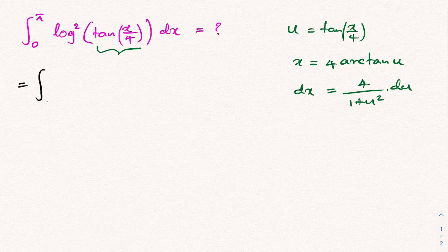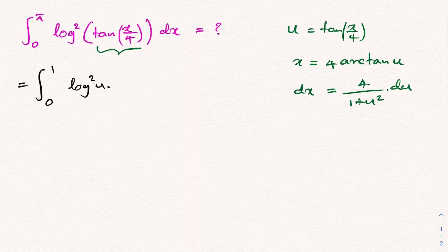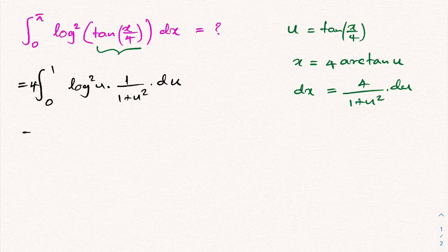For the new limits: when x approaches 0, u also approaches 0; when x approaches π, tan(π/4) = 1. So the natural log squared of tan(x/4) becomes ln²(u), and dx gives us 4/(1 + u²) du, with the 4 pulled outside the integral sign. We have 4·∫₀¹ ln²(u)·1/(1 + u²) du.